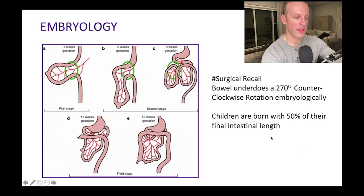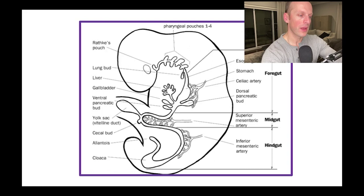Children are born at about 50% of their final intestinal length. In an adult, that would be somewhere between six to eight meters, so children are about half that length. Other embryological features worth noting is the difference between the foregut, the midgut, and the hindgut.